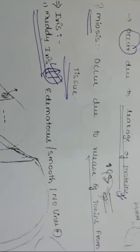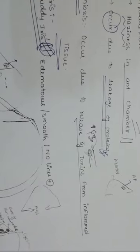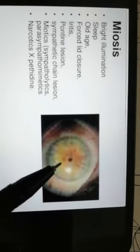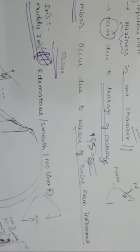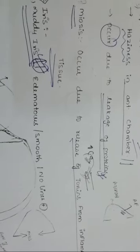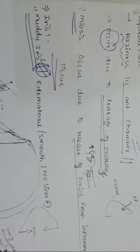Next we have miosis. In anterior uveitis, there is constriction of the pupil. This occurs due to release of toxins from inflamed tissues. The iris and pars plicata are inflamed, and toxins released from these inflamed tissues enter the anterior chamber and act on the iris, causing pupil constriction — this is miosis due to release of toxins from inflamed tissues.